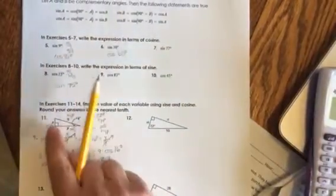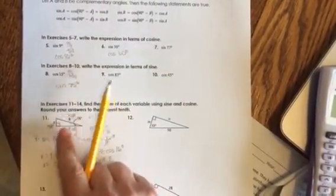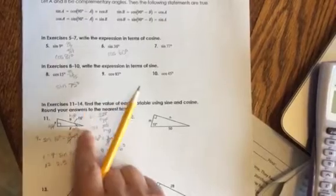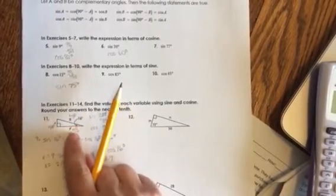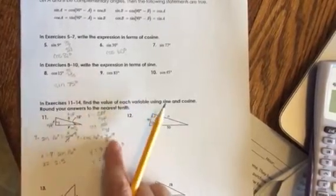Anytime you have a problem that is dealing with opposite and hypotenuse, you can use sine. If you're using adjacent and hypotenuse, you're going to use cosine.